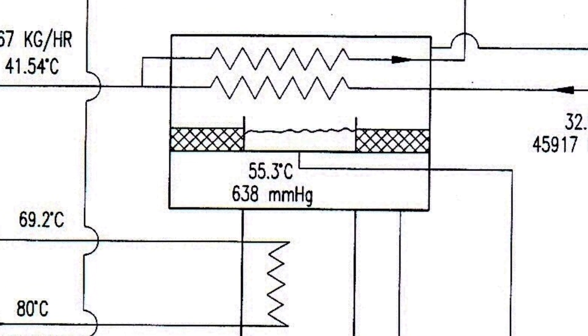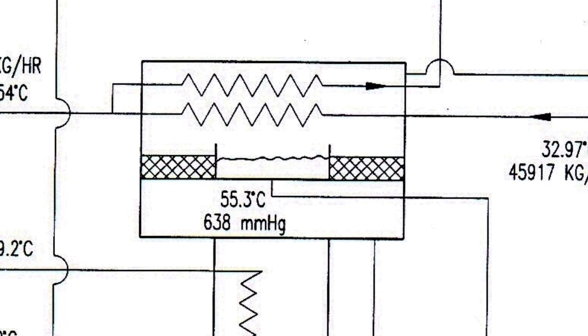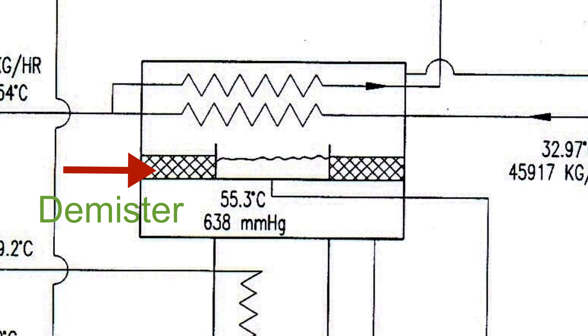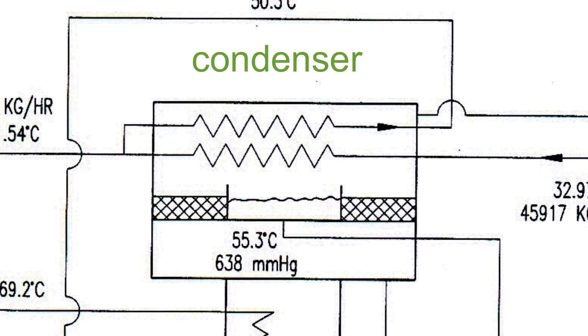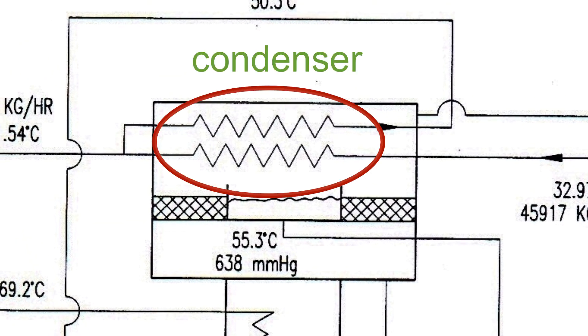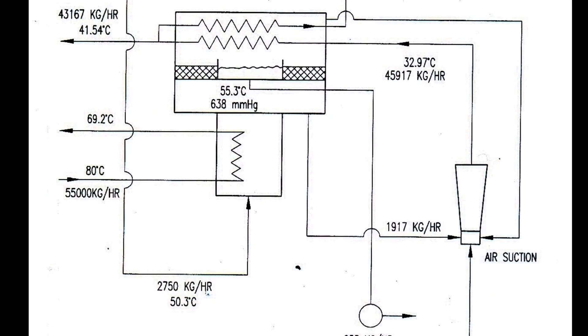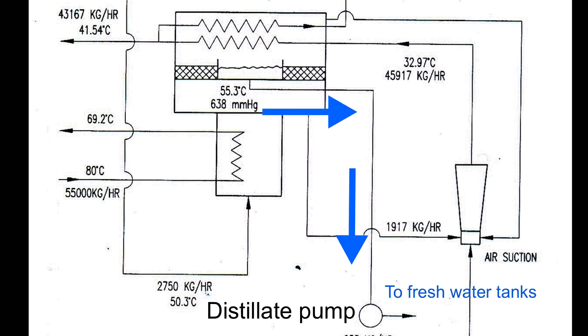As the water is boiled, the vapor rises and is filtered by the demister. The vapor is then cooled by the seawater-cooled condenser and fresh water is produced, to be pumped by the distillate pump to the freshwater tanks.